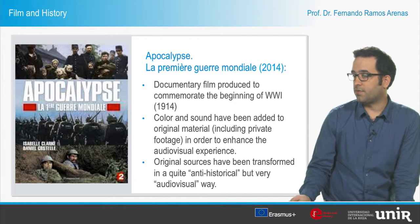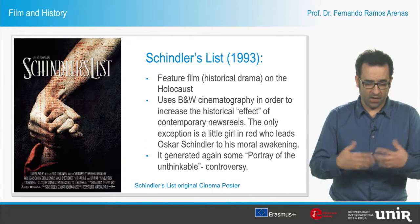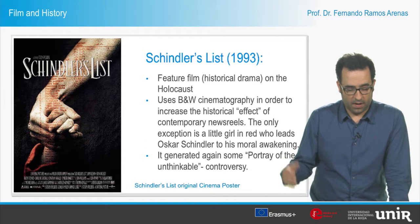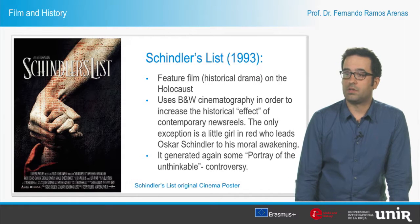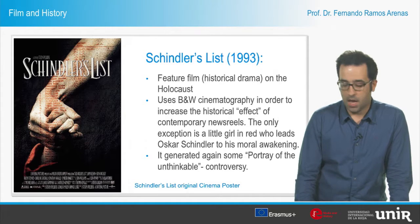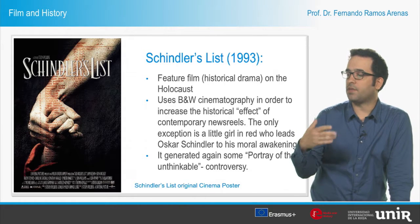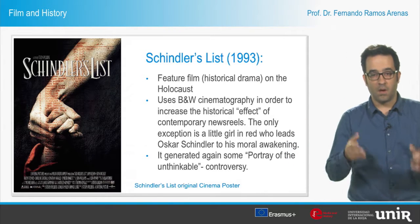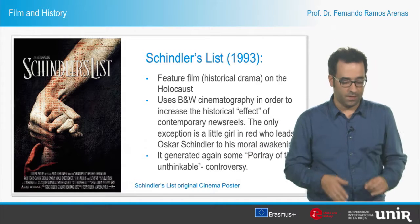The second example, quite different indeed, would be Schindler's List — which is a kind of counter-example. As you may probably know, this is a feature film, a historical drama on the Holocaust made by Steven Spielberg in 1993. I find really interesting the way this film uses black and white cinematography in order to increase the historical effect upon us of the contemporary newsreel from the 1930s and 1940s.